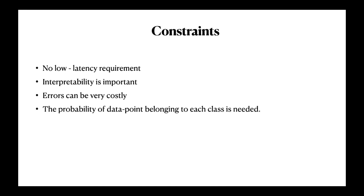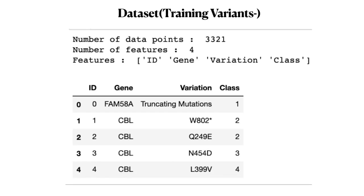So we have already downloaded training variants and training text. Let us see what's inside them. Our training variants file consists of ID, gene, variation, and class. We have the details of 3,321 unique values with their gene, the variation shown by that gene, and the class to which it belongs. We have 10 different classes to which these values can belong.